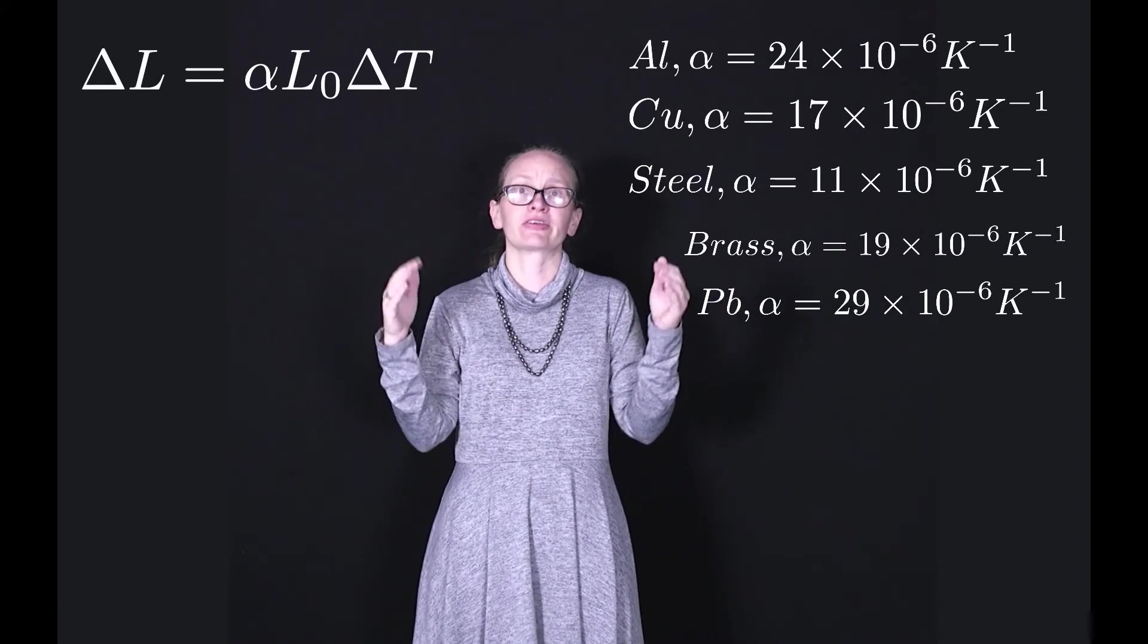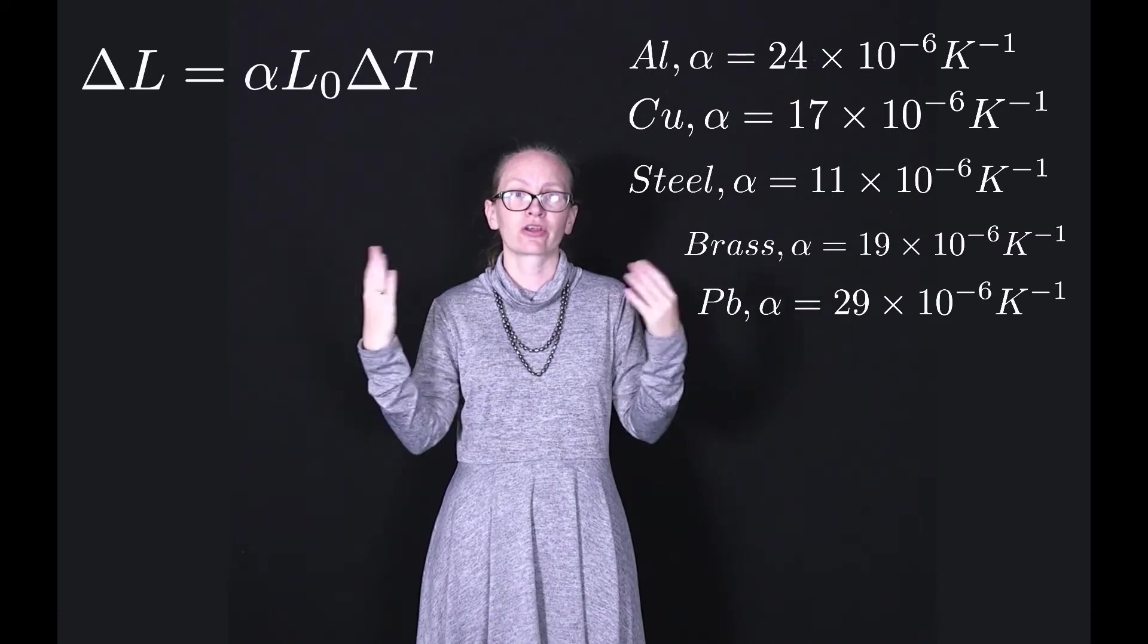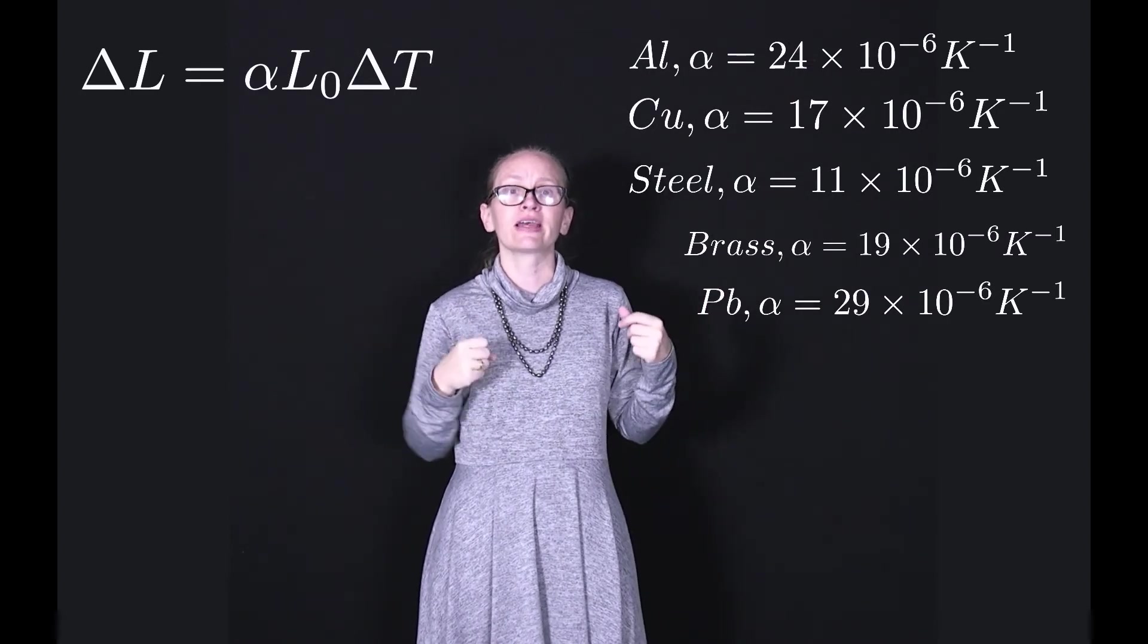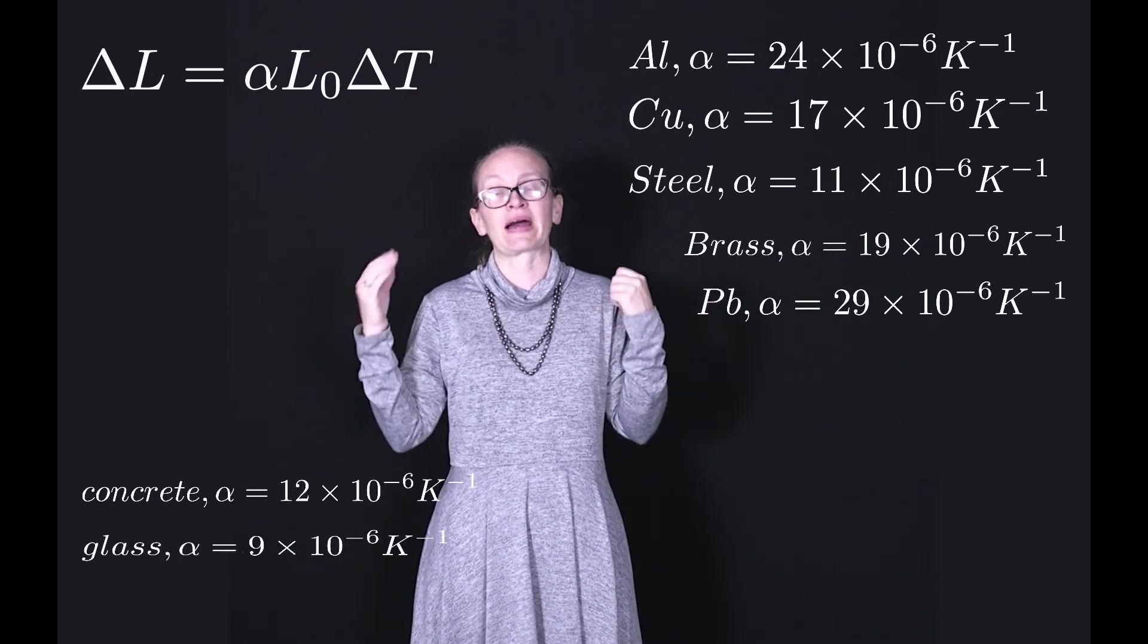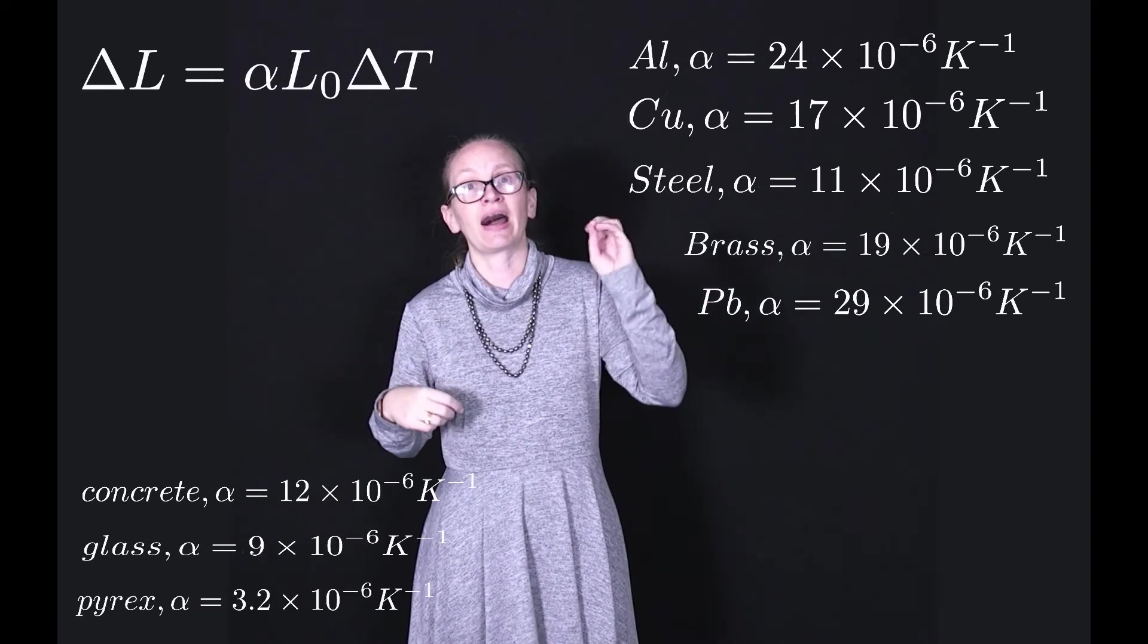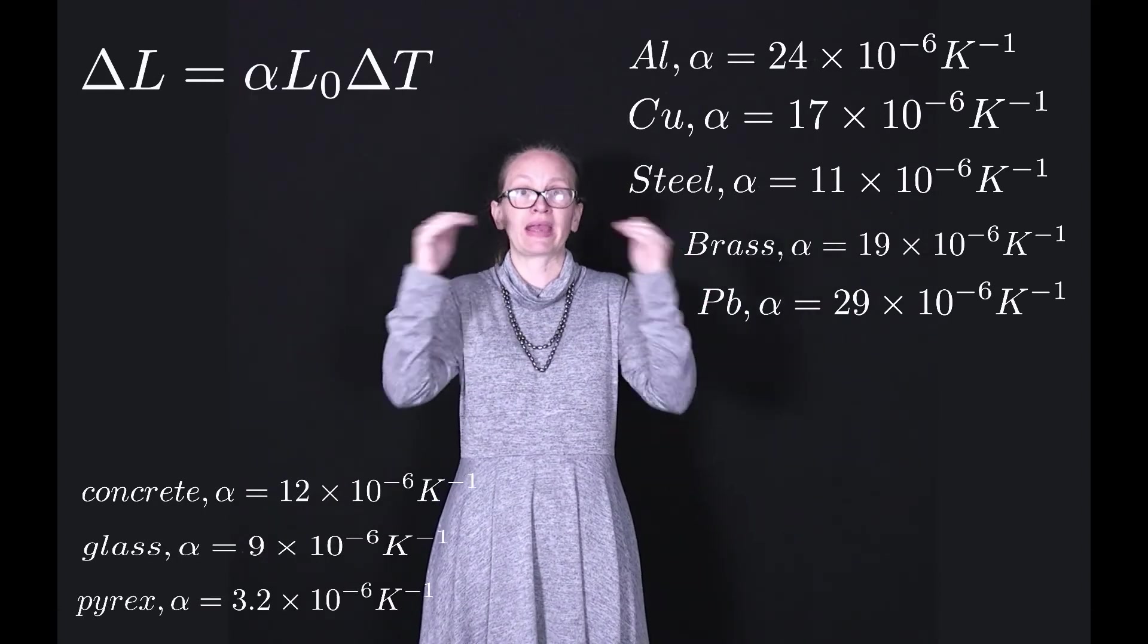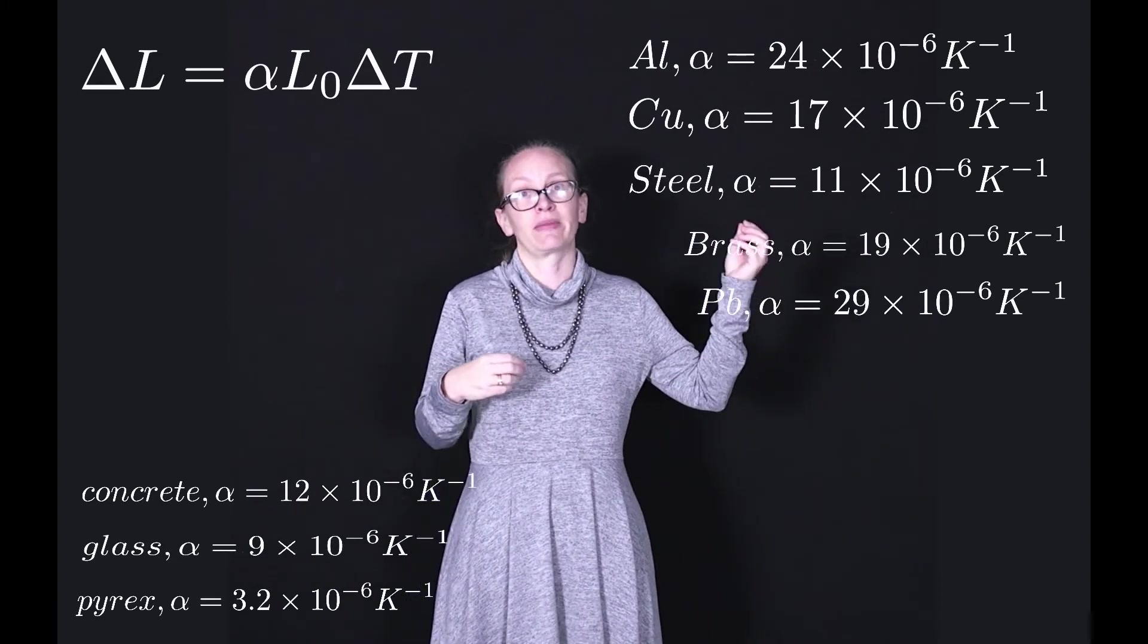Other materials typically have slightly smaller thermal expansion coefficients. Concrete is 12 × 10⁻⁶ per degree C. Glass is around about 9 × 10⁻⁶ per degree C. And Pyrex, which is often used to make bakeware, is around about 3.2 × 10⁻⁶.